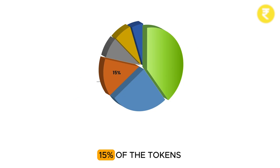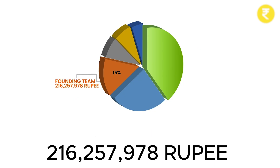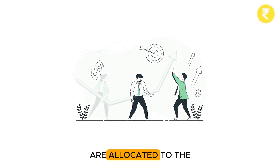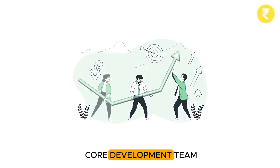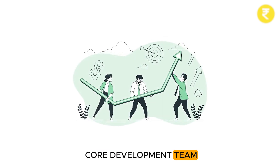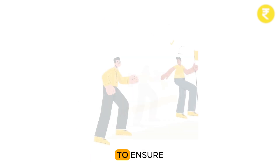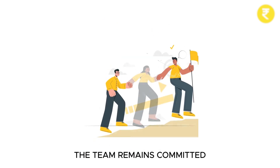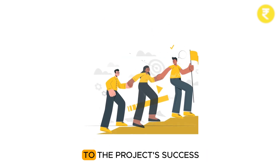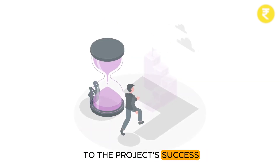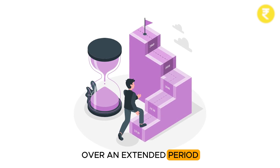15% of the tokens, totaling 216,257,978 rupee tokens, are allocated to the core development team. These tokens are subject to vesting schedules to ensure the team remains committed to the project's success over an extended period.